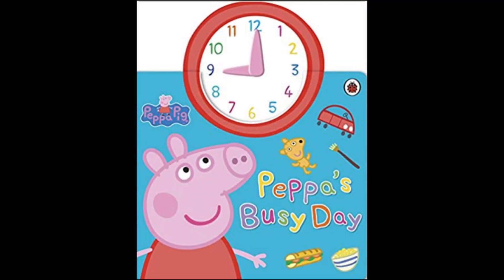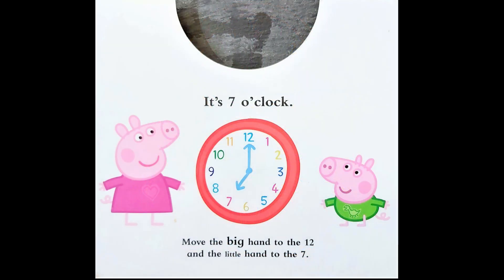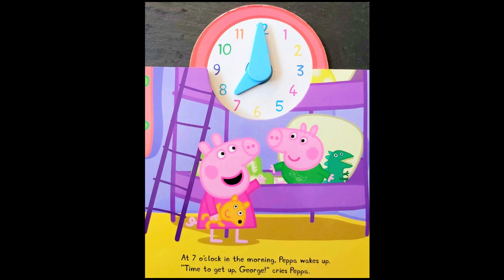Peppa Pig, Peppa's busy day. It is seven o'clock. Move the big hand to the twelve and the little hand to the seven. At seven o'clock in the morning, Peppa wakes up. Time to get up George, cries Peppa.